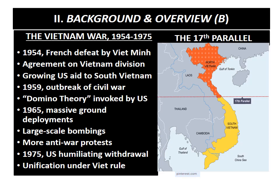Despite its vast military superiority, the American army was incapable of defeating the Viet Minh and their allies in South Vietnam. To avoid sinking deeper into the Vietnamese quagmire and to cut the cost of an assured defeat, the Nixon administration went to great lengths to bring the Viet Minh to the negotiating table. A ceasefire agreement was signed by the two sides in 1973, which opened the way for North Vietnam to take over control of the whole of South Vietnam after the humiliating withdrawal of the United States from Saigon in 1975.